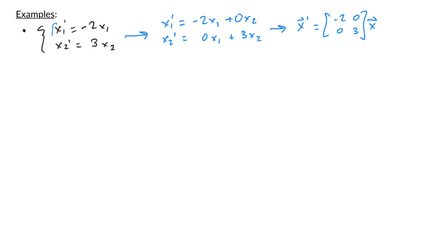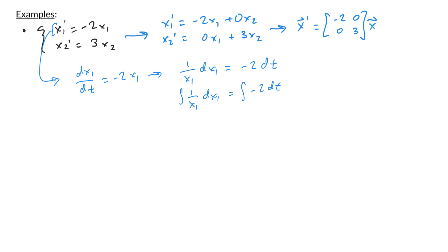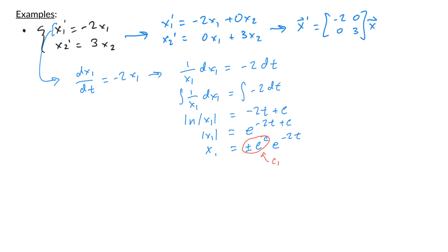Looking at the first equation, dx1/dt = -2x1 is again separable. Writing (1/x1)dx1 = -2dt and integrating both sides gives ln|x1| = -2t + c. Exponentiating: |x1| = e^(-2t+c). Removing absolute values and grouping constants as c1 gives x1 = c1·e^(-2t).